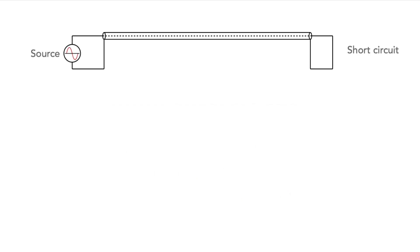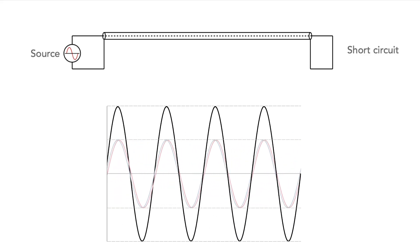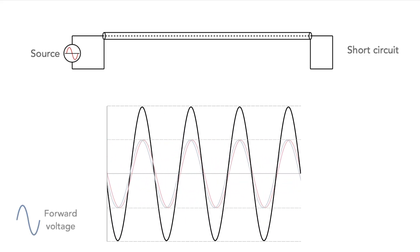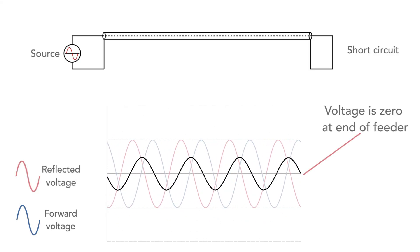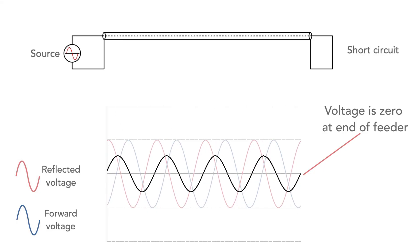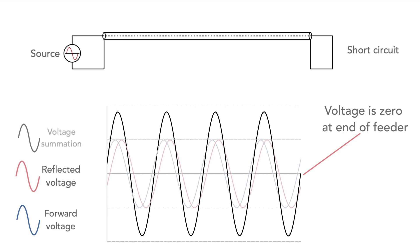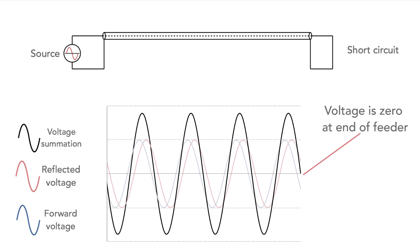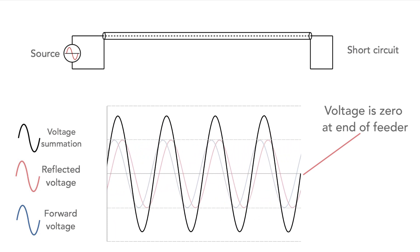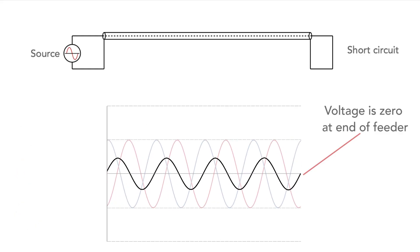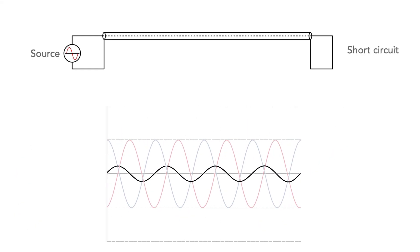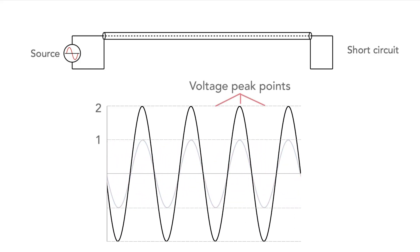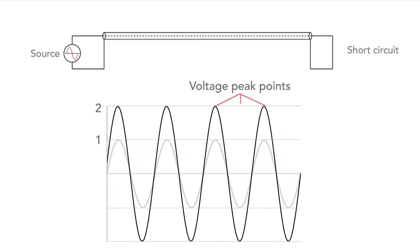Now let's look at the case where a short circuit is applied to the end of the feeder instead of a load. Here we see the voltage waveform moving forwards to the load or in this case a short circuit. At the end point the voltage must be zero and power is reflected. A reflected voltage waveform is seen and the overall voltage at any point along the line is the sum of the forward and reverse voltage waveforms. It can be seen that the voltage is always zero at the short circuit point but it rises to a peak of twice the forward voltage further back along the line, but more of this later.